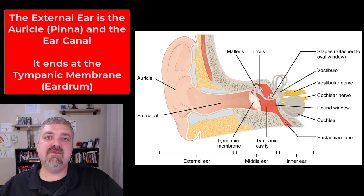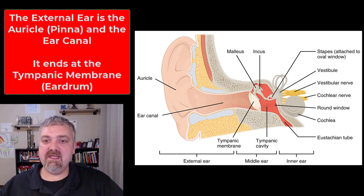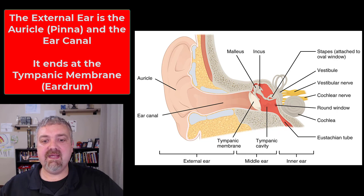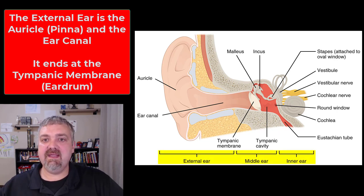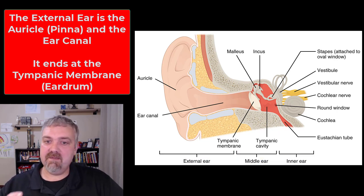Hey everybody, Dr. O. In this video, we're going to cover the anatomy of the ear. The ear can be broken down into three areas: the external ear, the middle ear, and the inner ear. So let's start with the external ear.